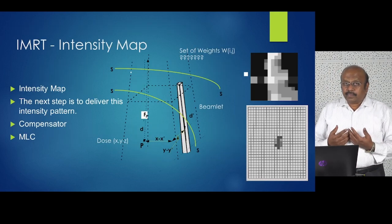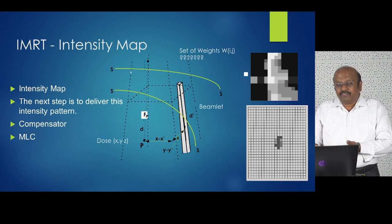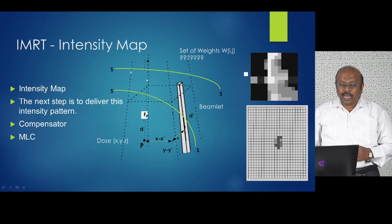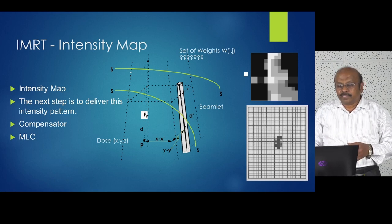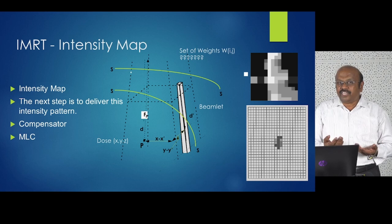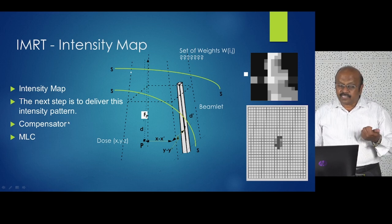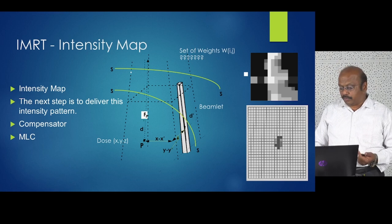Now you have obtained an intensity map through optimization. You have to deliver this intensity map. When using a multi-leaf collimator, you define beamlets — the width of the beamlet corresponds to the width of the multi-leaf collimator leaf. The length can be changed depending on the type of delivery. To deliver this intensity pattern you can use a compensator, which provides much smoother delivery, or you can use MLC.